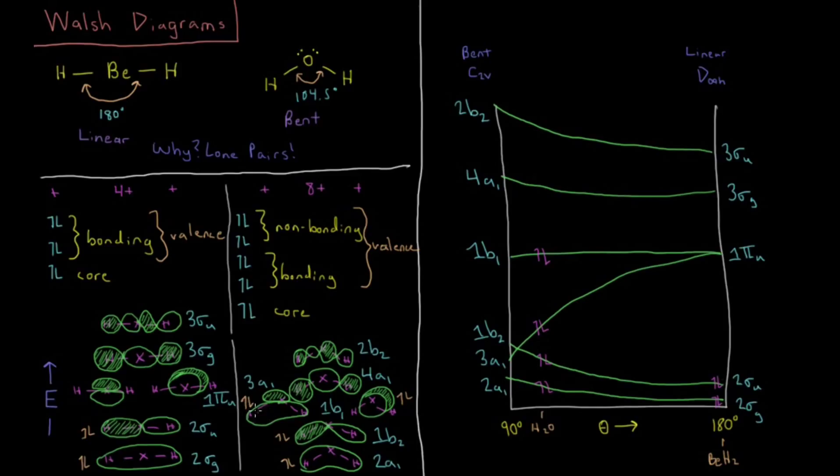So now it really pays for the molecule to have, if this is occupied, for it to have a bent geometry and greatly lower the energy of this from a non-bonding to somewhat of a bonding orbital, even though overall it's still non-bonding in the lone pair.